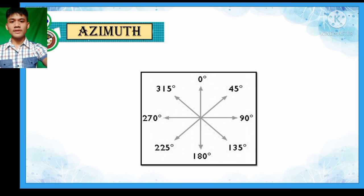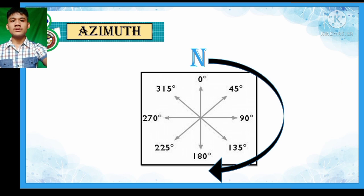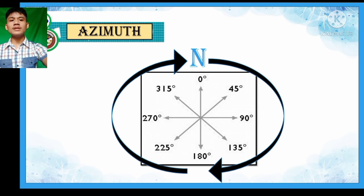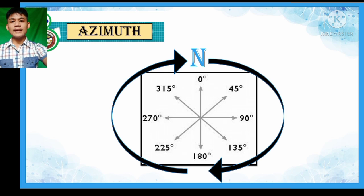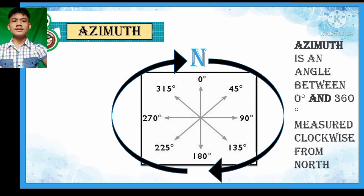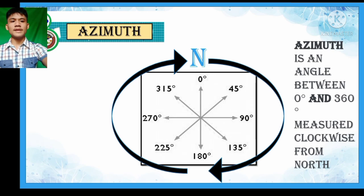As you observe, we have zero degrees which serves as our reference direction, which is the north. The measurement increases in a clockwise manner — we have 45 degrees, 90 degrees, 135 degrees, and so on. The measurements increase per point of interest. So in that case, azimuth defines an angle between zero degrees and 360 degrees, measured clockwise from the north. Azimuth could be any measurement as long as it is between zero degrees and 360 degrees and is measured clockwise from the reference direction, which is the north.